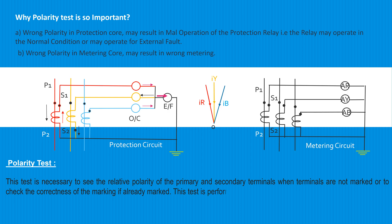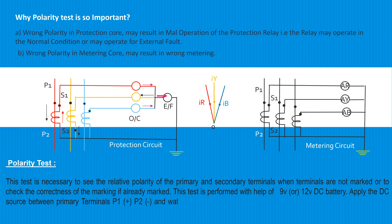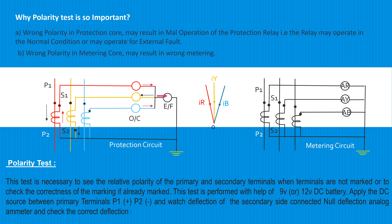This test is performed with the help of a 9-volt or 12-volt DC battery. Apply the DC source between primary terminals P1 positive and P2 negative, and watch the deflection of the secondary side connected null-deflection analog ammeter, and check the correct deflection of the meter and compare with the polarity mark.